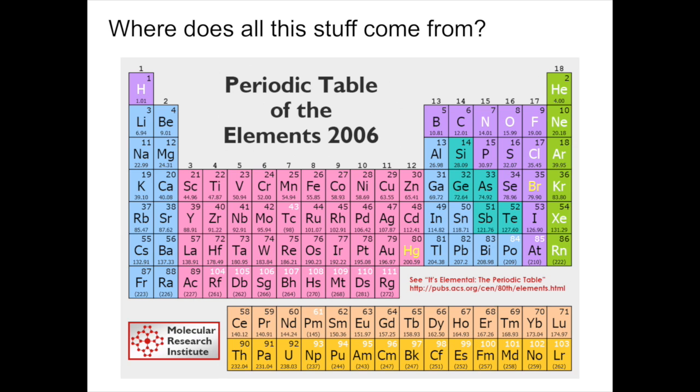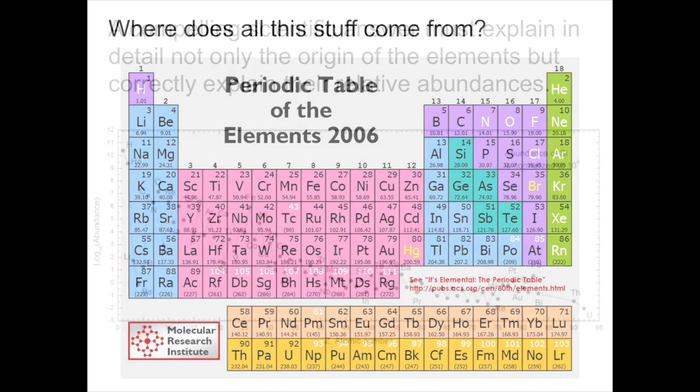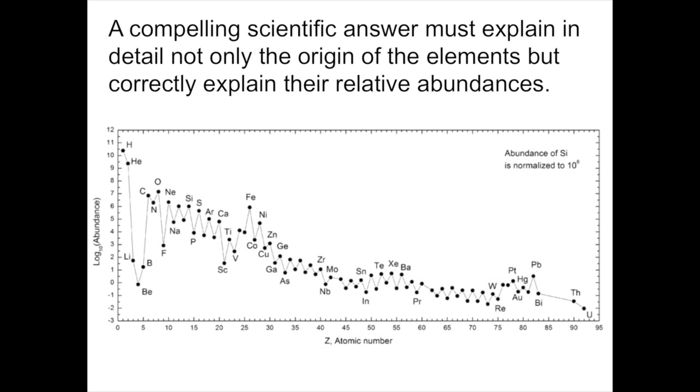So let's get back to our main question. Where does all of this stuff come from? Where does hydrogen, helium, the lightest elements, all of these other elements we call the metals, all the way up to uranium and beyond, where does it come from? We have to explain this with a compelling scientific answer. And a compelling scientific answer for the origin of all the elements must explain in detail not only the origin of these elements but correctly explain their relative abundances.